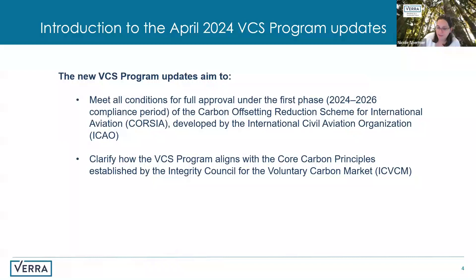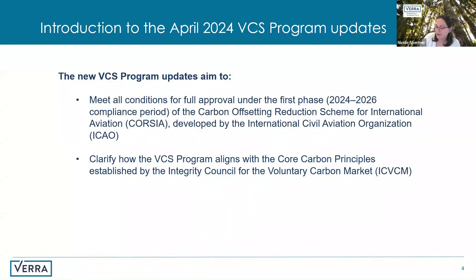A little bit of introduction about the purpose of these updates. We made these updates with the aim to meet all of the conditions for full approval under the first phase — the 2024–2026 compliance period of the Carbon Offsetting Reduction Scheme for International Aviation, or CORSIA, developed by the International Civil Aviation Organization. We also made them to clarify how the BCS program aligns with the core carbon principles established by the Integrity Council for the Voluntary Carbon Market. My colleagues Justin and Andrew are online today to help answer any related questions during the Q&A.